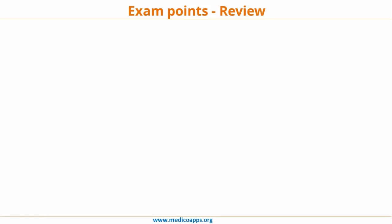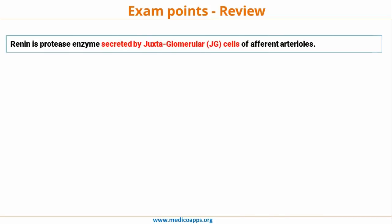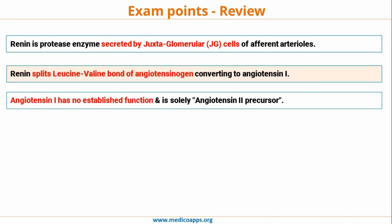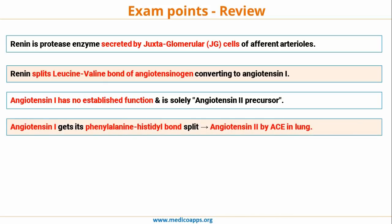Let's review the important points frequently asked about the renin-angiotensin system in PG entrance examinations. Renin is a protease enzyme secreted by the JG cells of the afferent arteriole. Renin splits the leucine-valine bond of angiotensinogen, converting it into angiotensin 1. Angiotensin 1 has no established function and is solely a precursor to angiotensin 2.